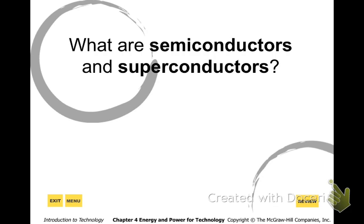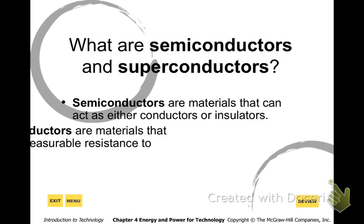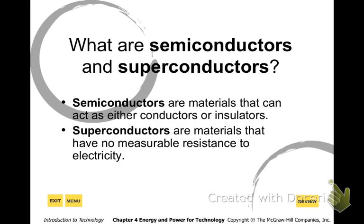Now semiconductors and superconductors — very neat materials. Semiconductors can be either a conductor or an insulator. Silicon is a type of material that, when we put electricity to it, can act as a conductor or as a switch to turn things on, and on its own it can be an insulator that blocks the flow of electricity. It's a very neat material that can act as either, depending on how we use it. A superconductor has absolutely no resistance to electricity — nothing slows down the flow. We call those superconductors; they are great conductors.